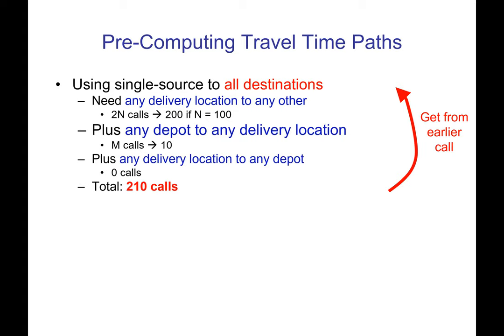Our pathfinding algorithm is not much more complicated. It basically just has to not stop when it hits one intersection that is the target — it has to keep going and find the path to all the intersections, but it's not much code change to do that.